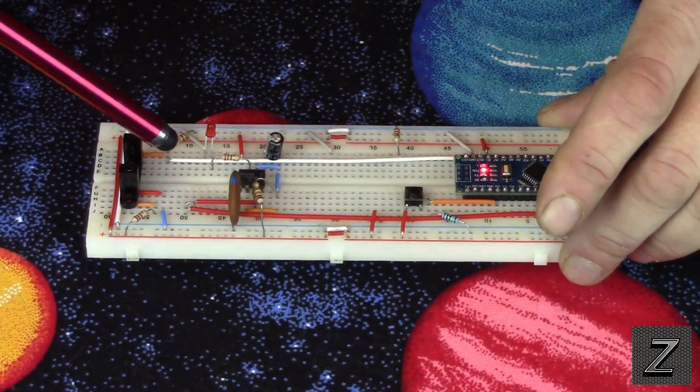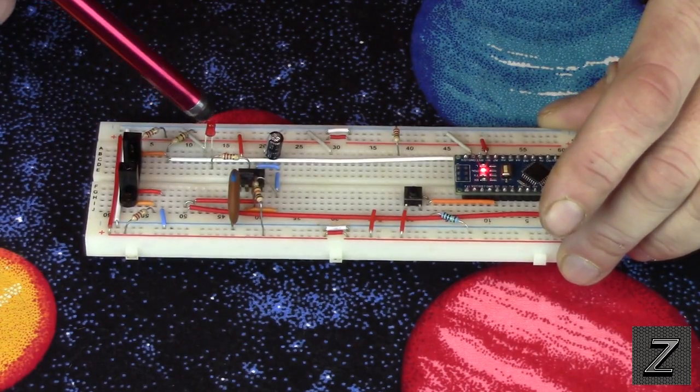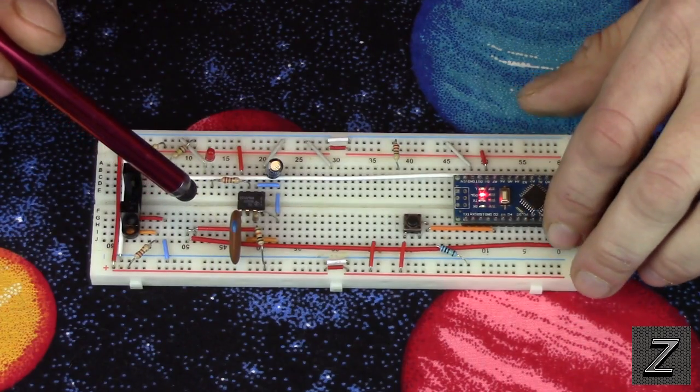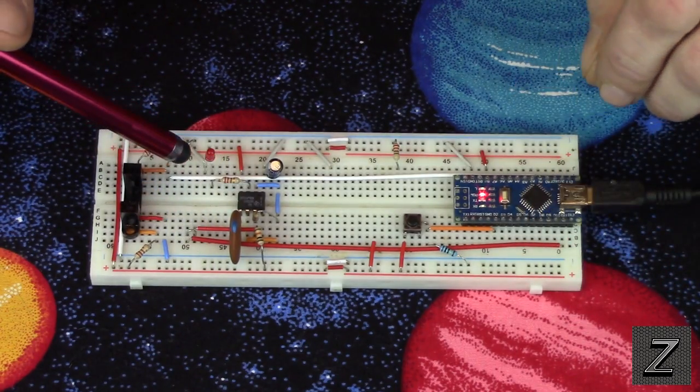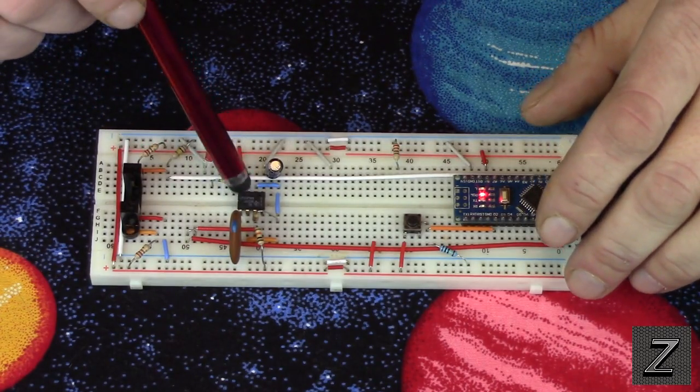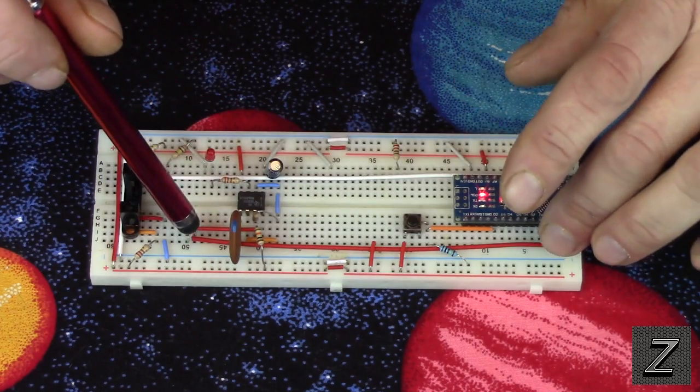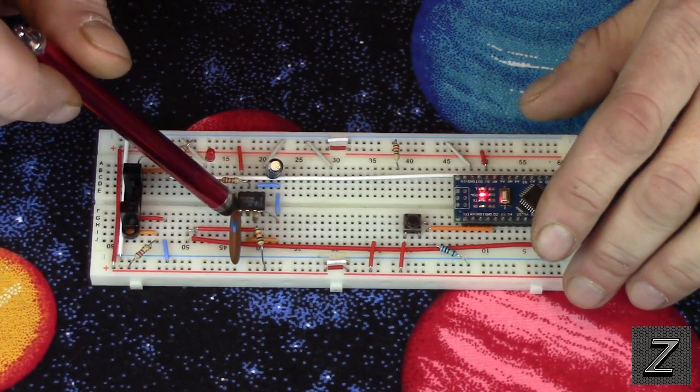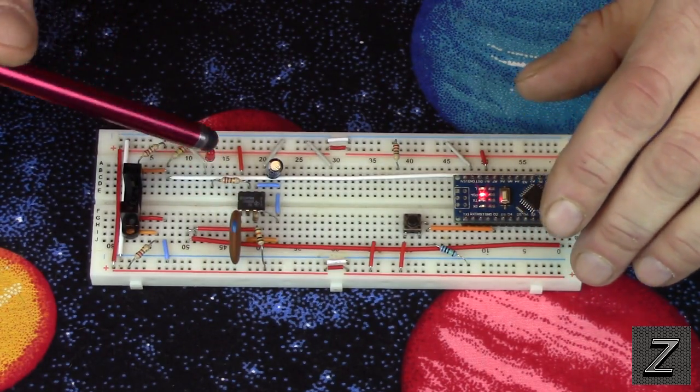Currently I have the VCC for the 555 timer hooked to digital pin 11. So when digital pin 11 goes high, it turns the timer on. Now there's a couple other connections on here that need to go to the power rail and you don't have to hook those to pin 11. You can just hook them to power because when the chip doesn't have power to the VCC in, it just won't work.